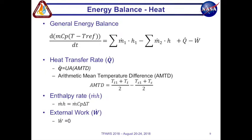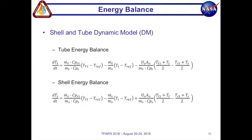And as you can see we have enthalpy rate which is our mass flow rate times enthalpy. And we are breaking down enthalpy to our specific heat times a differential in temperature. And since we assume there is no external work our w dot is equal to zero.